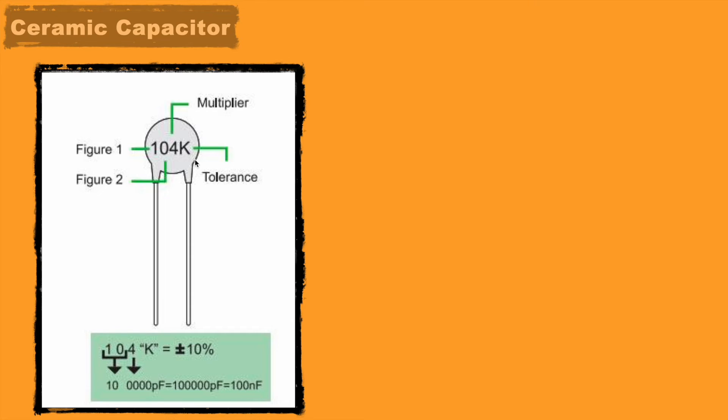And the letter present at the last is for the tolerance. Different letters represent different tolerance values of the capacitor. In this case, the letter K tells that this capacitor has a tolerance of plus minus 10%. And the full chart we can find here.